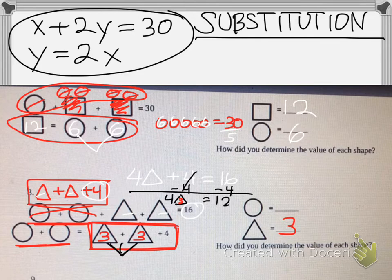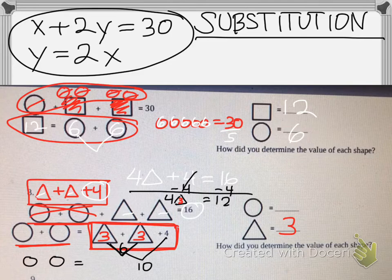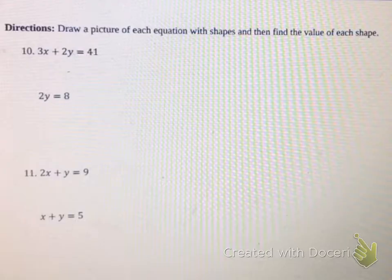So if we replace the triangle with three down here, I can see that three plus three is six, plus this four here is ten. And I can also see that I still have two circles that equal ten, so each circle must equal five. Done.